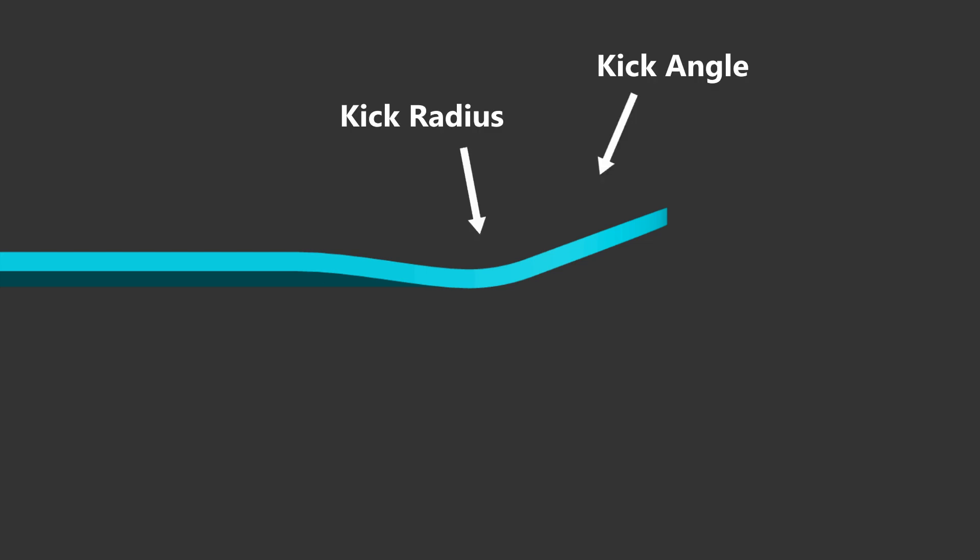If your board has an angled kick tail, it is defined by two parameters: an angle and a radius. The angle defines how steep the kick ultimately gets, and the radius defines how quickly it gets steep.